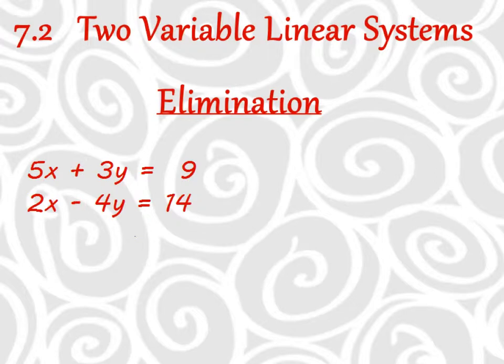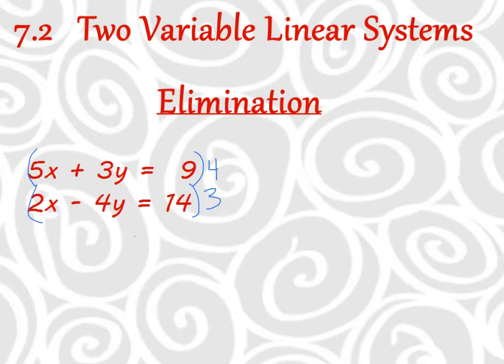What does 3 and 4 both go into? They both go into 12, so I want to turn them both into 12s. I would take the top equation times 4 and the bottom equation times 3. As long as I take everything times that value, it doesn't change the equation.